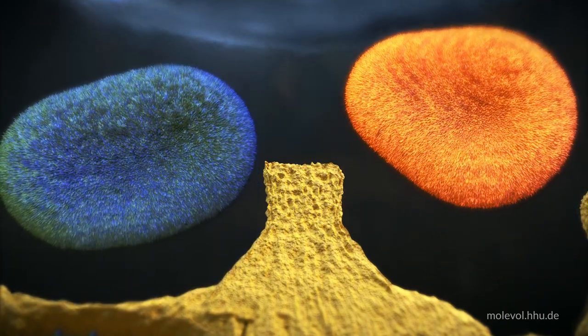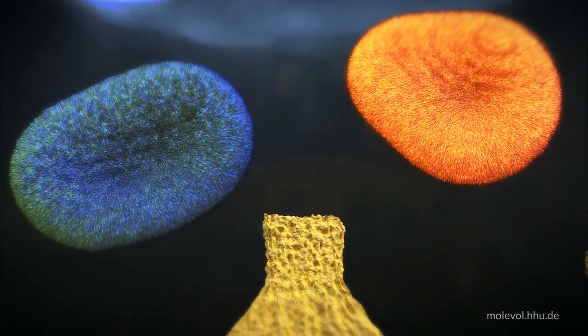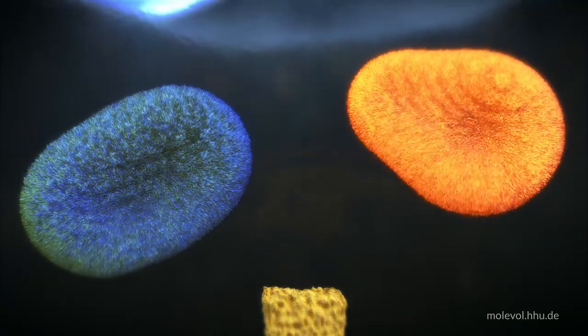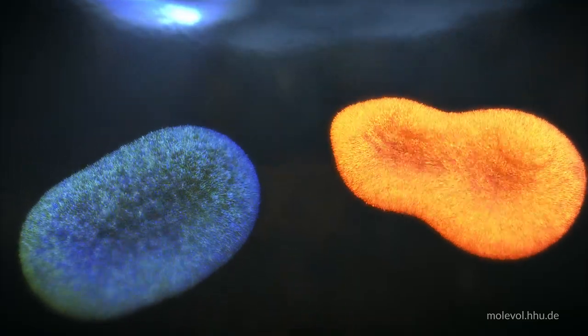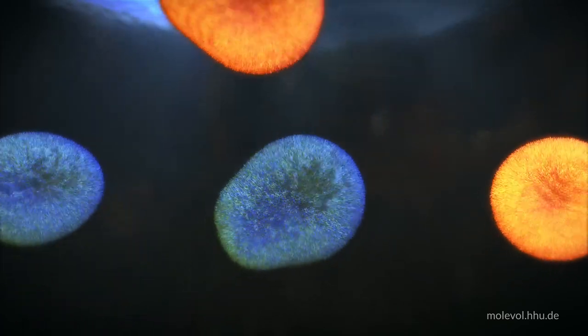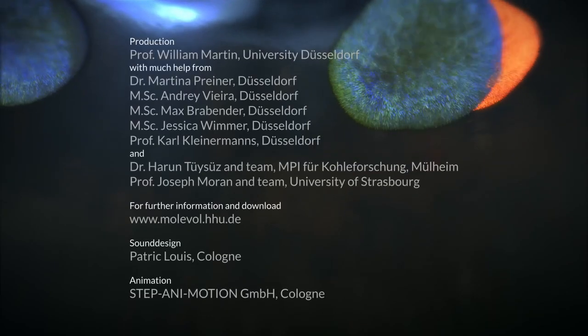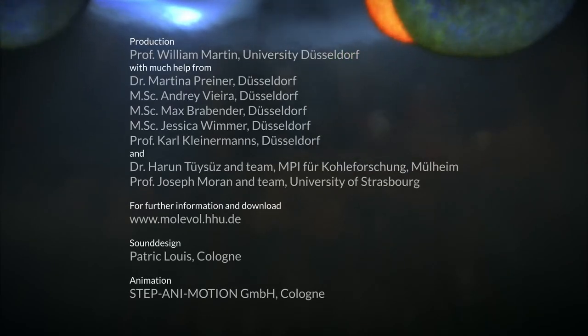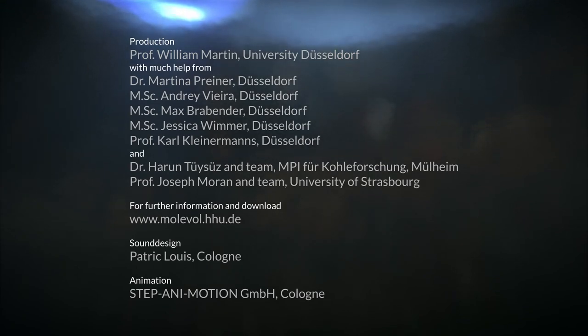The first bacteria and archaea in this theory were acetogens and methanogens, respectively, organisms that live from hydrogen and carbon dioxide and still inhabit the crust today.